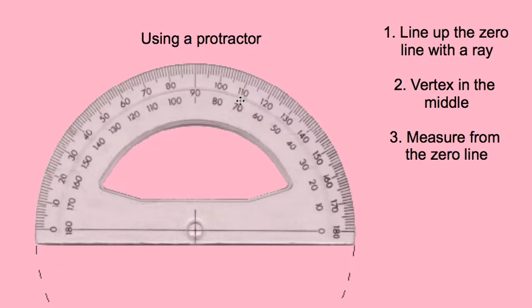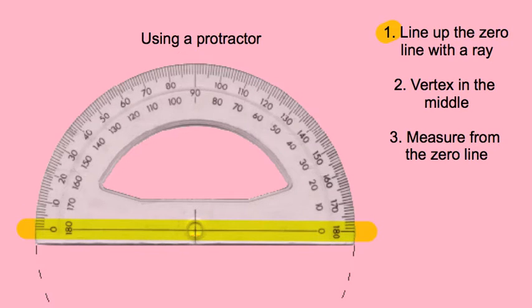It shouldn't be confusing, though, if you number one, line up your zero line with the rays. Where is the zero line? It's the line that extends along the bottom — not the bottom of the protractor, but the line that extends along the bottom and goes right through zero over here.